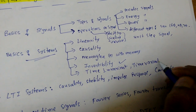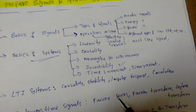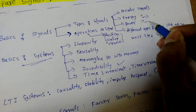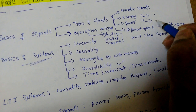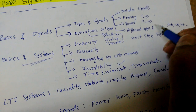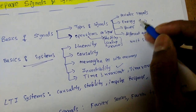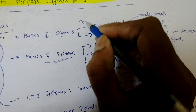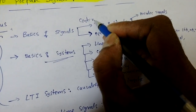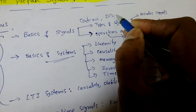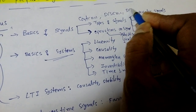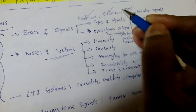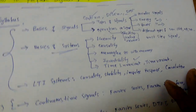We also need to learn how to find the energy or power of a given signal, whether it is discrete or continuous. The types of signals are continuous, discrete, and digital, but in Signals and Systems we will cover only continuous and discrete.